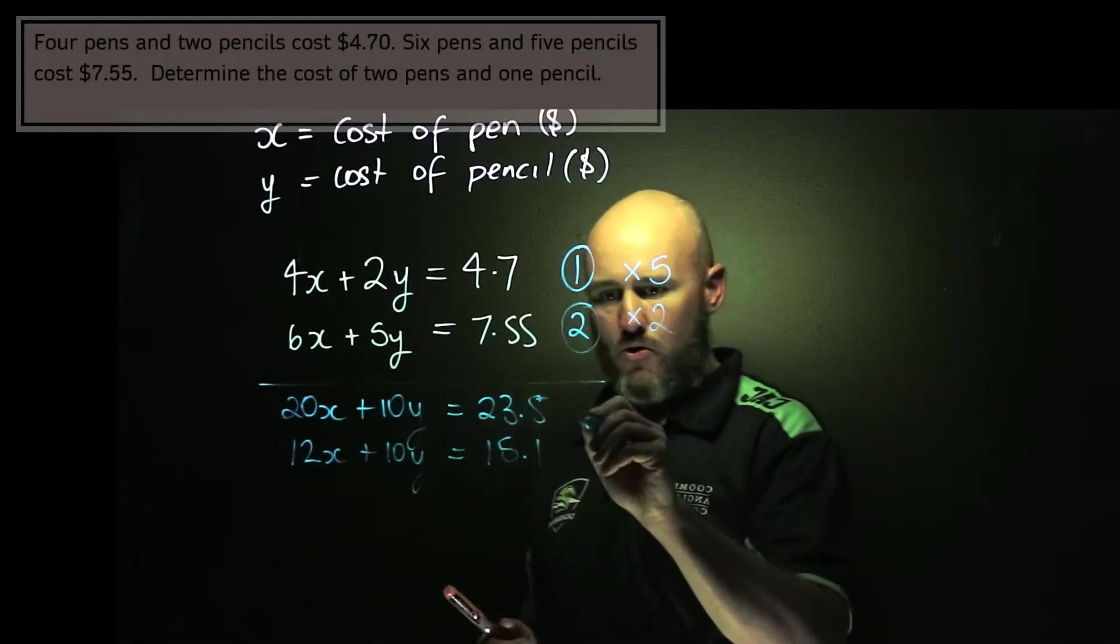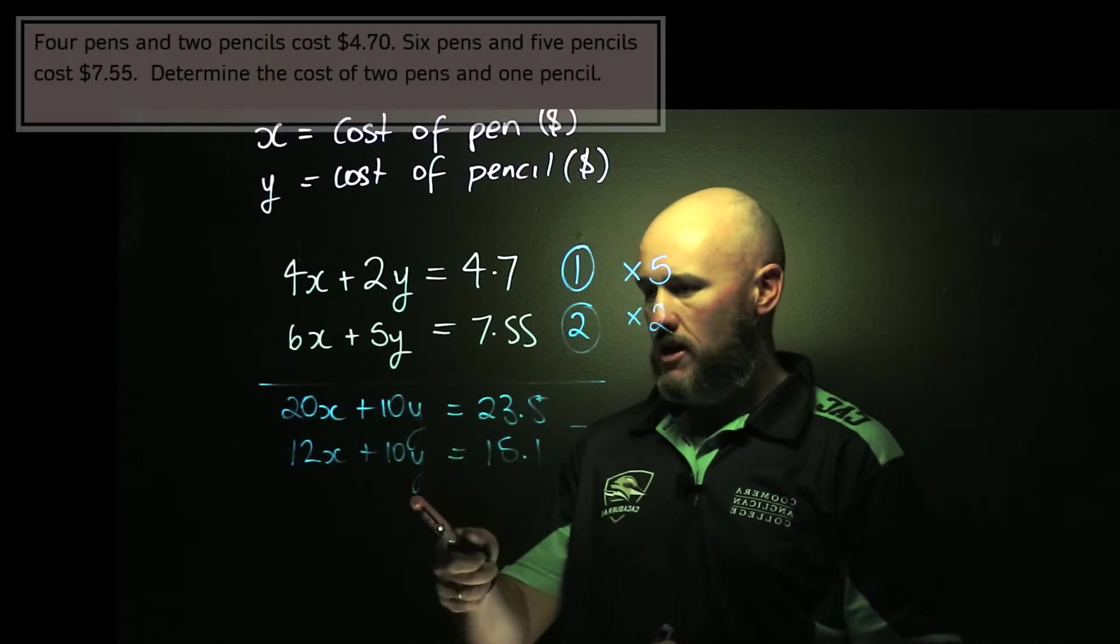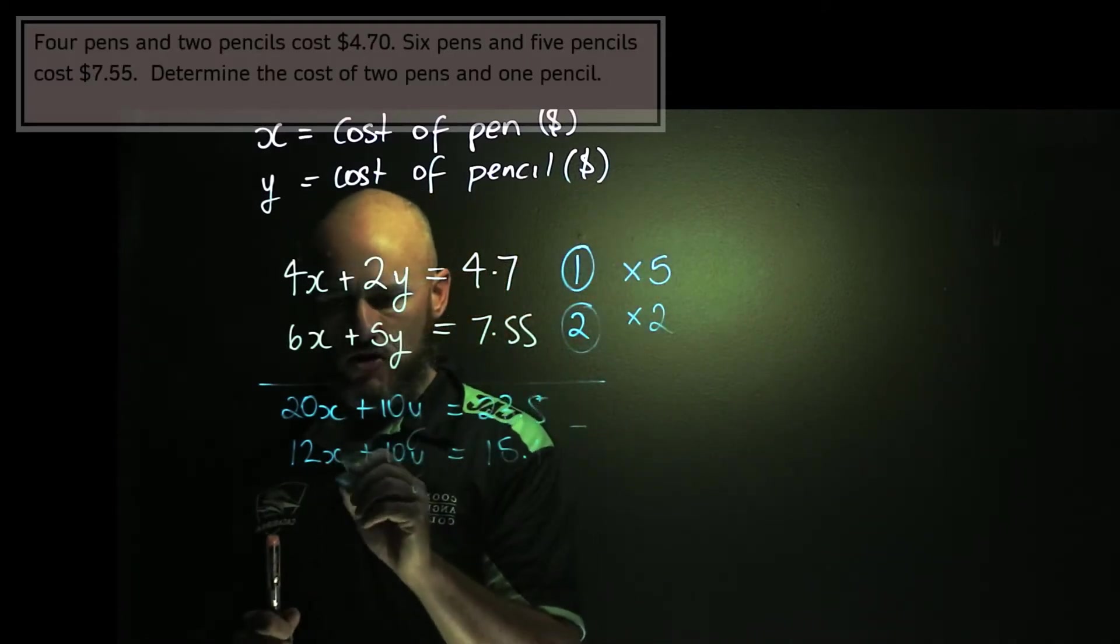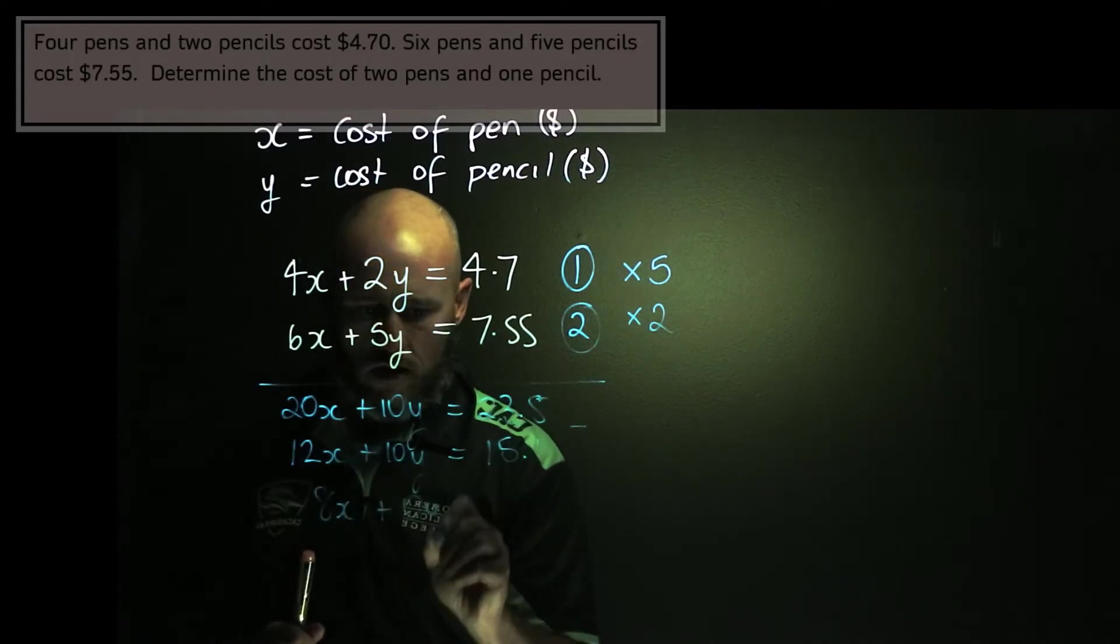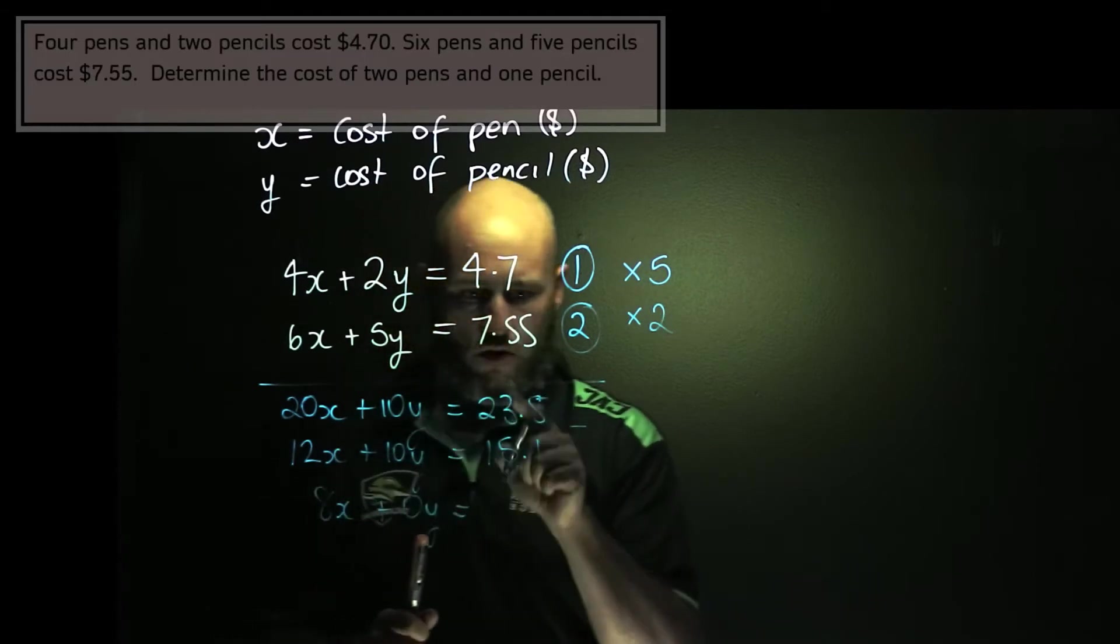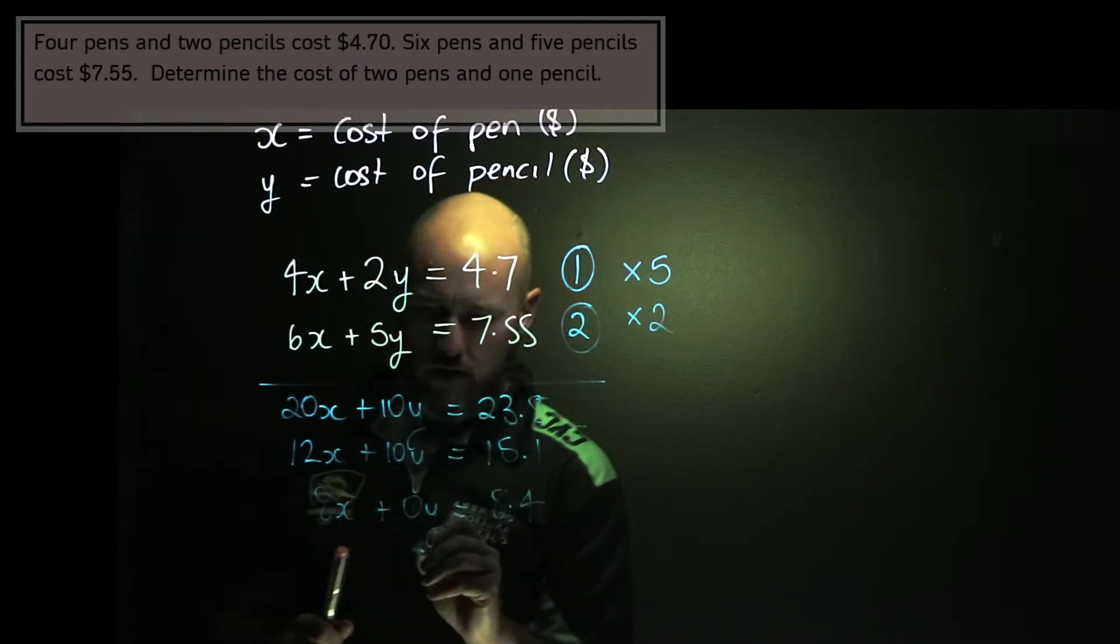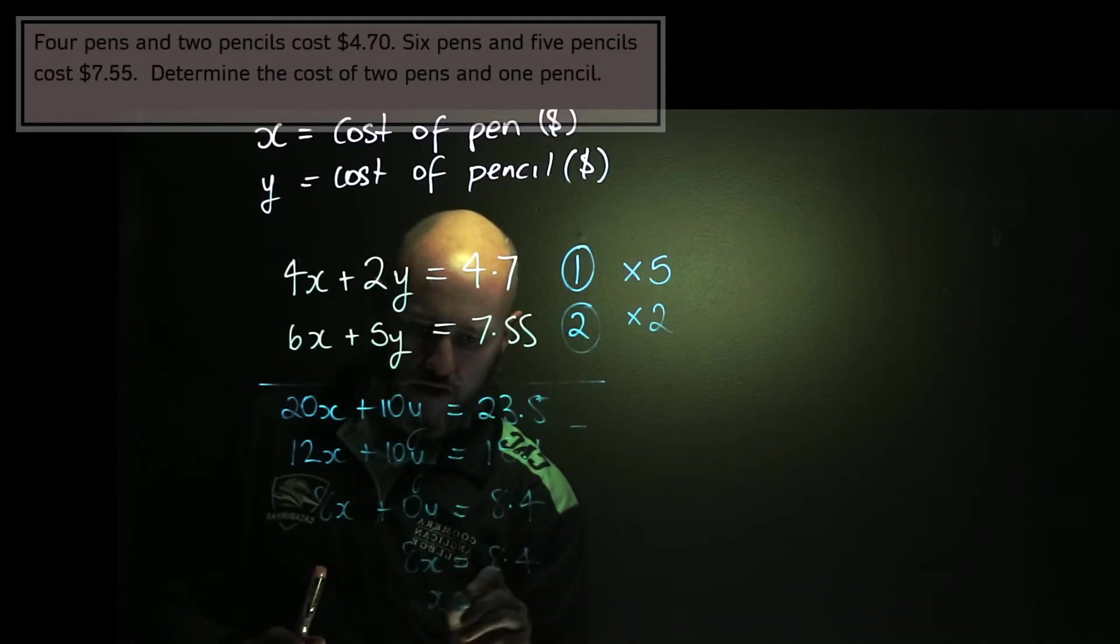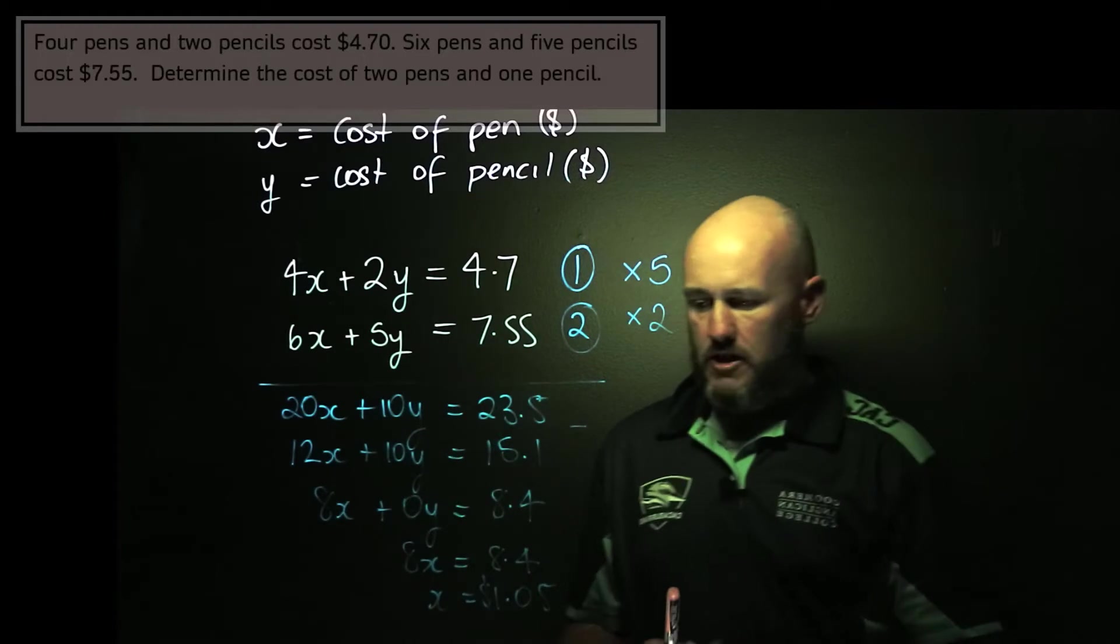Now I can see that if I do equation 1 minus equation 2, this will cancel out my 10y's, but also leave me in the positives. So 20x minus 12x is equal to 8x plus 0y, and this is equal to 8.4. So I get 8x equals 8.4. Of course, that means that x is equal to 1.05, and that's in dollars. So there's my first solution.